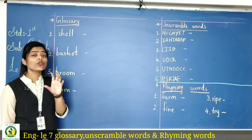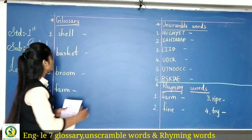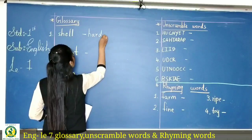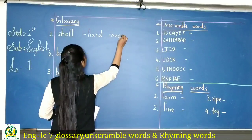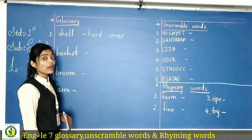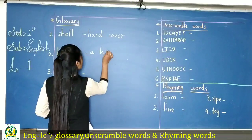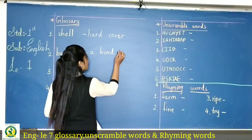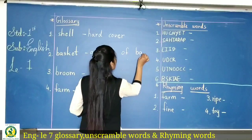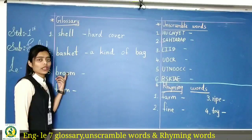Shell means jo coconut hota hai uska bahar ka jo cover hota hai — that is called shell. Shell ka matlab hota hai 'hard cover'. Then basket — so basket means a kind of bag. Wo ek basket hai, wo bag ka ek prakara hai. Basket means a kind of bag.